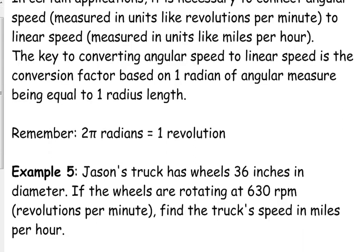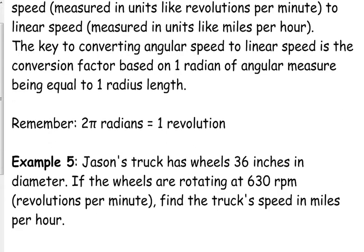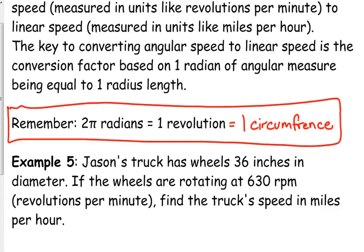One revolution is equal to two pi radians, or that's the entire circumference. It's going to differ based on the problem. So, you do need to write this down right here. Two pi radians is one revolution. Revolution is just another term for the circumference. So, let's look at a problem.